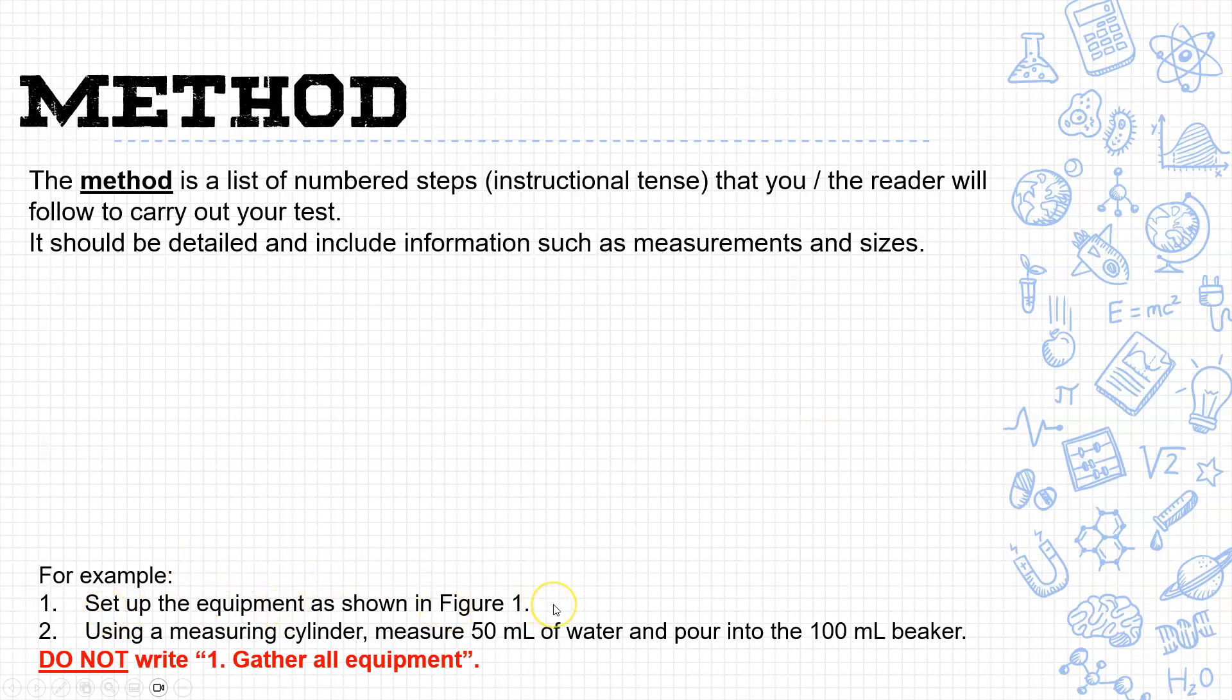We may say something like 'set up equipment as shown in Figure 1.' If you've got a picture with all your equipment set up, it makes this so much easier than trying to describe how to set it up. Step two: using a measuring cylinder, measure 50 mils of water and pour it into the 100 mil beaker. Very clear volumes, very clear step - I know exactly how to do this.